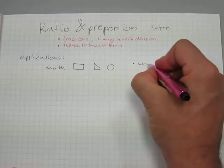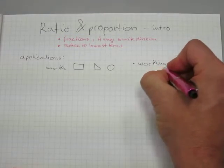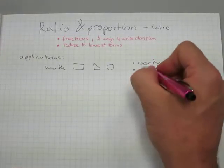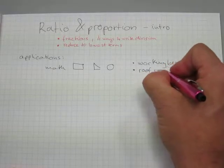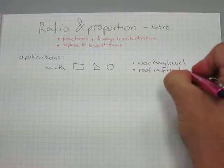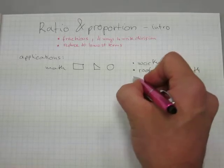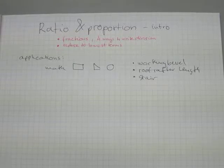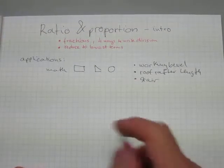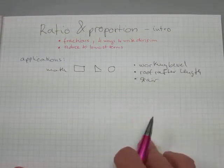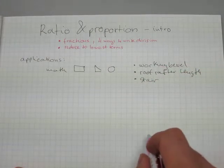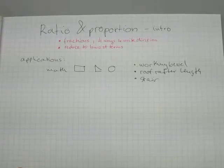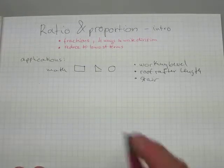Calculations with working bevel, roof rafter length calculation, and stair calculations - metal or wood, circular or winder or straight, it doesn't matter. Those are just some areas where the geometric shapes play a huge part, and with ratio and proportion you can get a whole lot of calculations done.